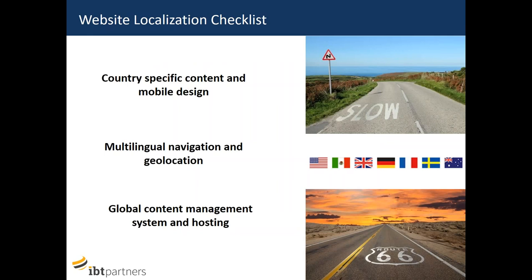The first is country-specific design and content and, of course, a mobile-enabled website. What does a road conjure up to someone who lives in Scotland versus someone who lives in California? These are different things. Localization is about tweaking and making sure that you are embedded in the local culture. It's also technical in terms of having multilingual navigation and geolocation so that you're identifying where your customers are coming from. Then it's having very good content management systems — the scaffolding you build websites on. Hosting is important for the speed of uploads and downloads for a local website, and that's very important given today's attention spans of about two seconds.